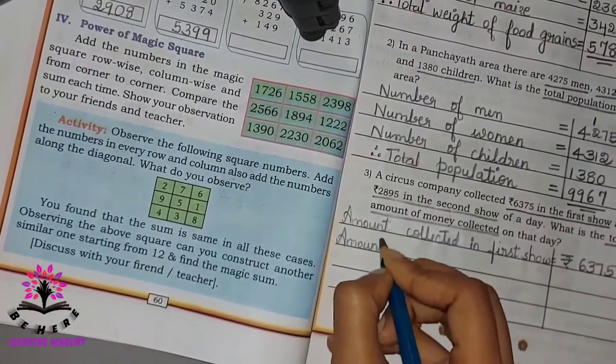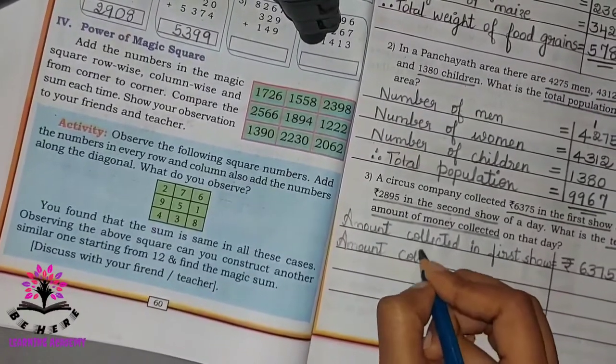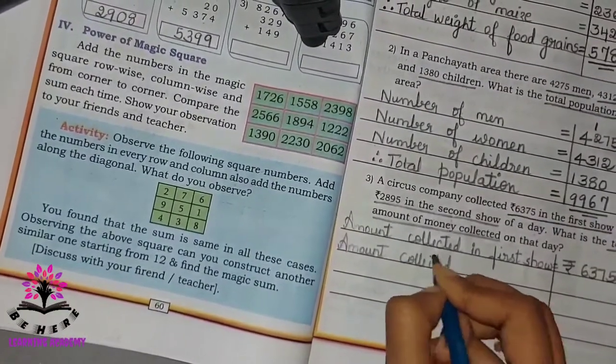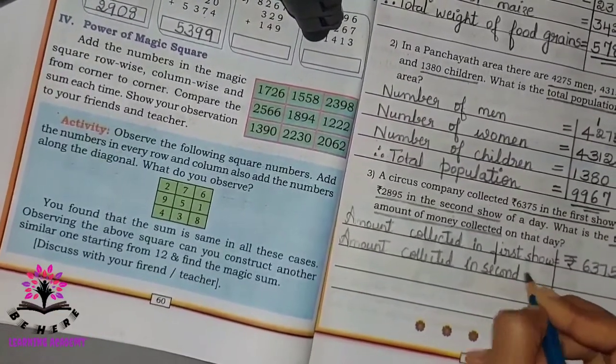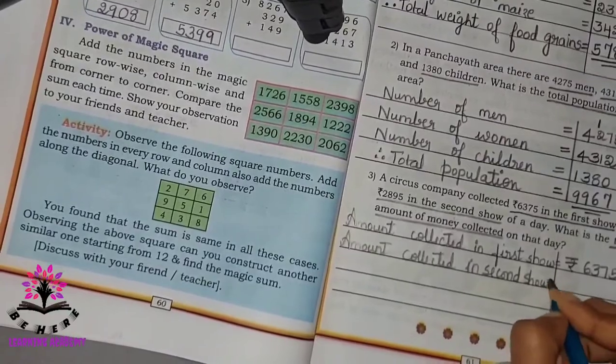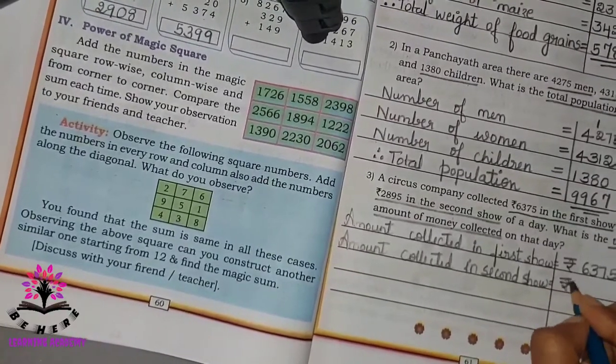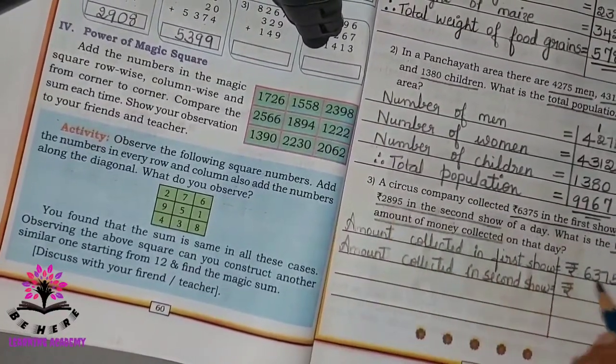Amount collected in the second show is equal to Rs. 2,895.